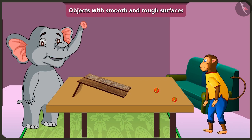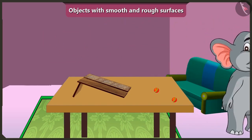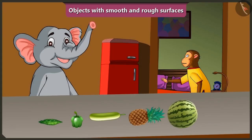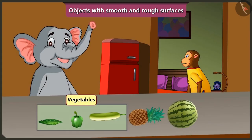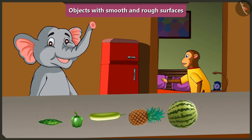Hey Jaggu, I am very hungry. Come on, let us go to the kitchen and eat something. Yes, let us go. Hey Jaggu, do eatables also have smooth or rough surfaces? Yes Appu, look — here are some vegetables and fruits. Now blindfold yourself and touch and feel these things.